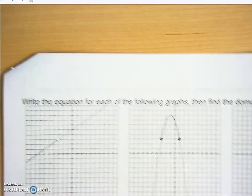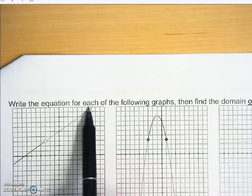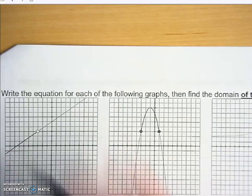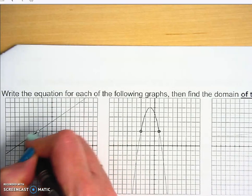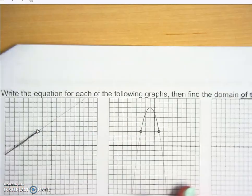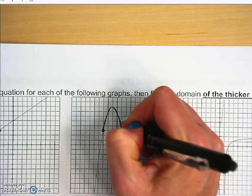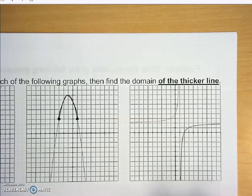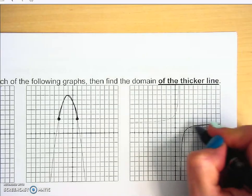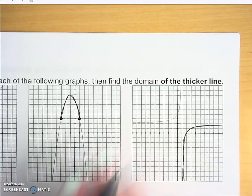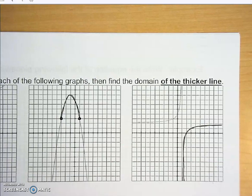We're starting with graphs and working towards the equation. It says to write the equation for each of the following graphs, then find the domain of the thicker line. The thicker, darker line is the piece we're focusing on — we get the equation of the full graph and then use the dark piece to determine our domain restrictions.